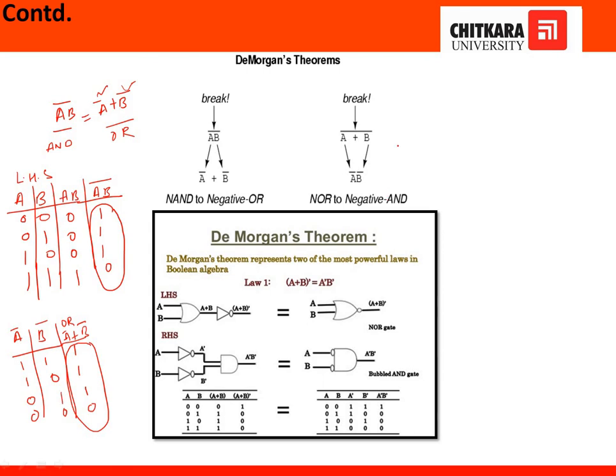The same happens in the second case as well. Both truth tables are equivalent — when we take the bar of something, it never affects the output; the resultant remains the same. But these transformations help us to minimize our equations.